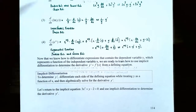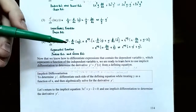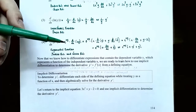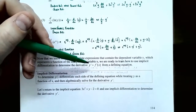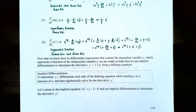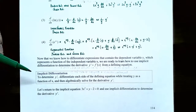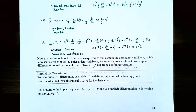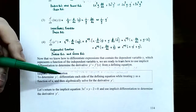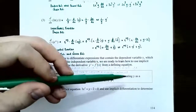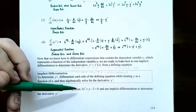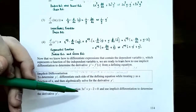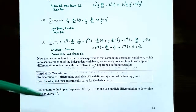Now that we know how to differentiate expressions involving the dependent variable y as a function of x, we can look at how to perform implicit differentiation on an equation involving x's and y. The goal of using implicit differentiation is still to find the derivative, represented as y prime, or y prime of x, or f prime of x in function notation. To determine the derivative, you differentiate both sides of the equation with respect to x while treating y as a function of x, then algebraically solve for y prime. Let's return to the implicit equation 3x squared plus y subtract 2 equals 0.